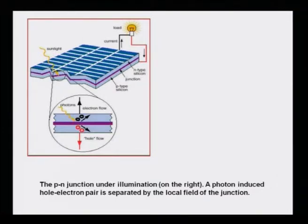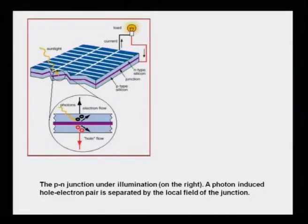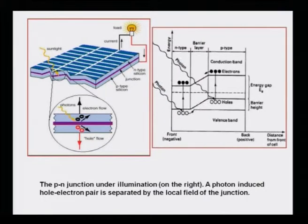The photons from sunlight create holes in the dye sensitizer and the electrons are pushed into the titanium dioxide. This is analogous to the n-p junction — a typical example of a silicon p-n junction under illumination. A photo-induced hole-electron pair is separated by the local field of the junction, and the interface is connected to the outer circuit, causing the bulb to light.